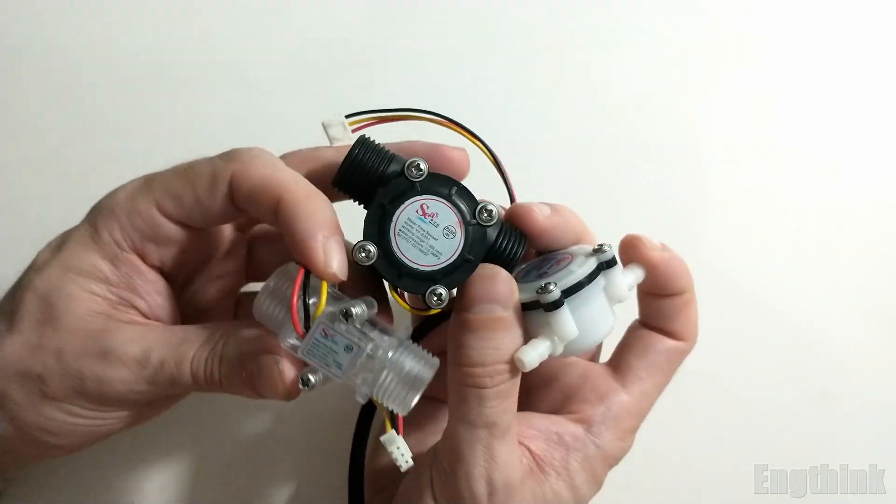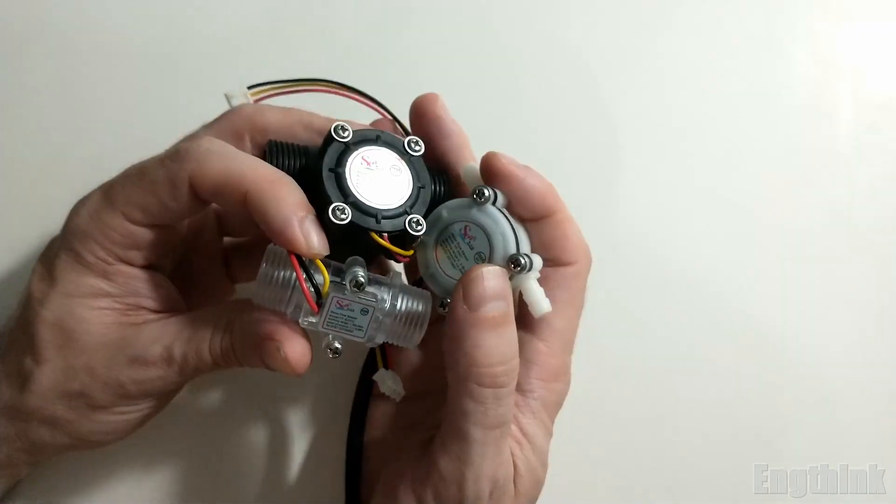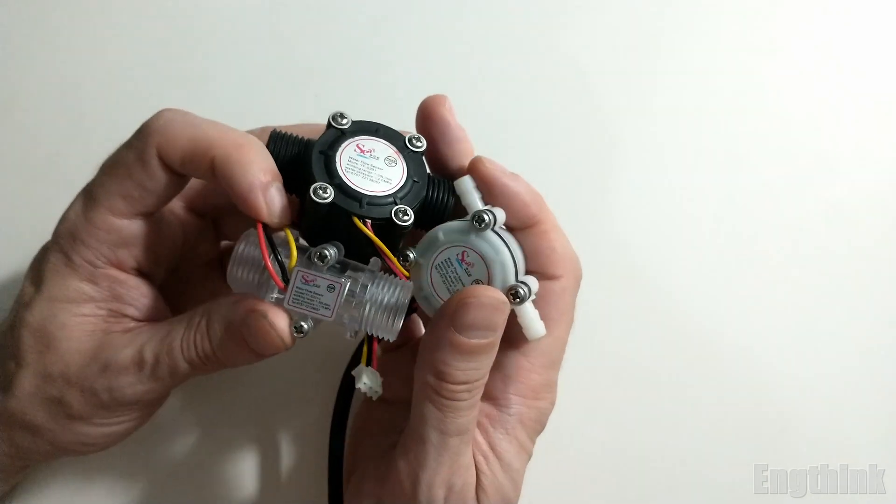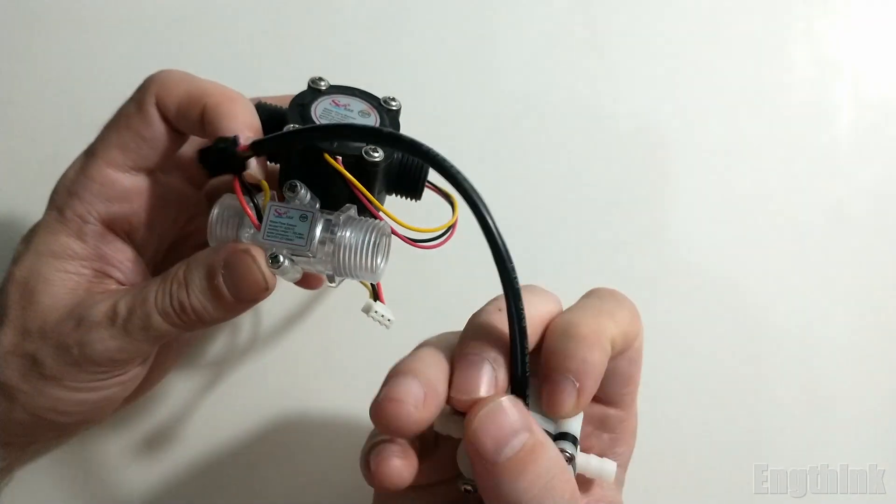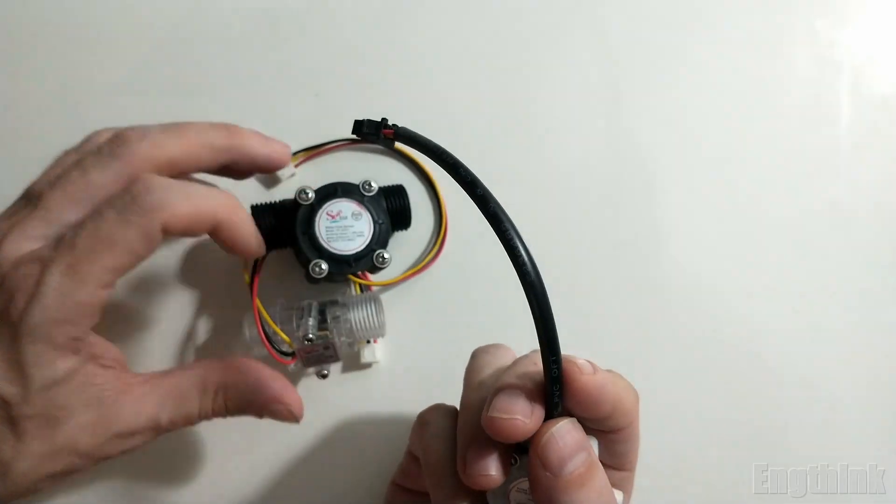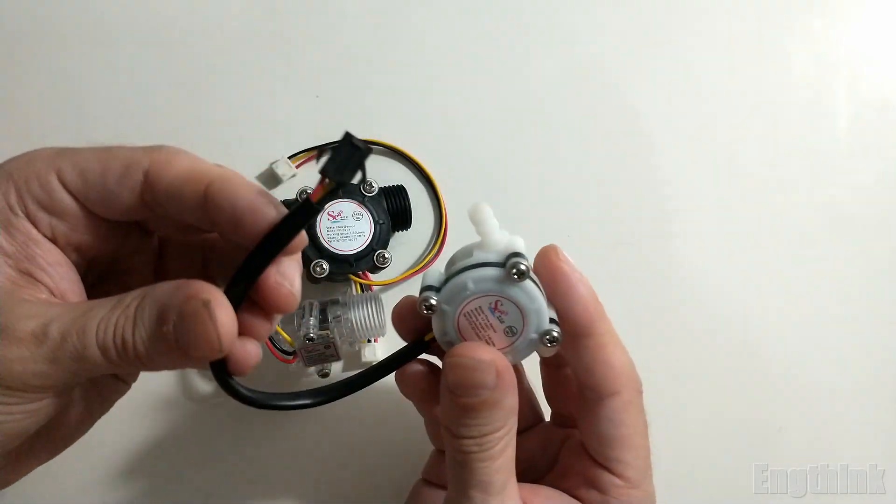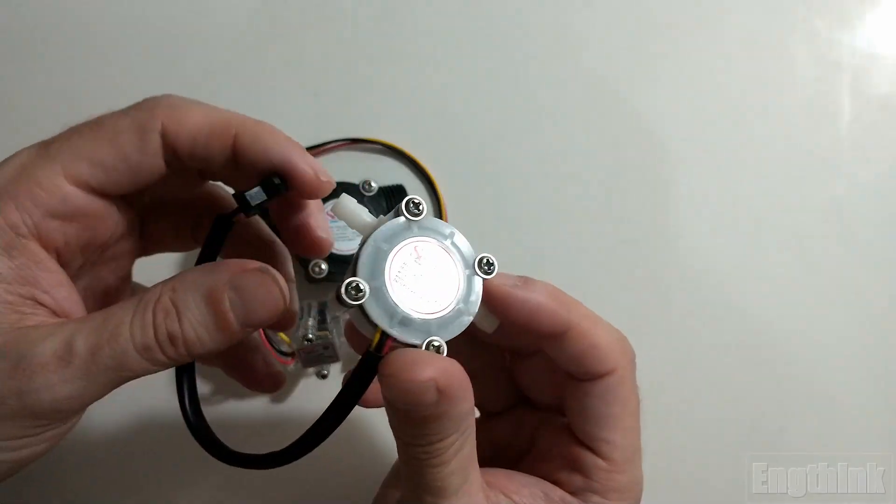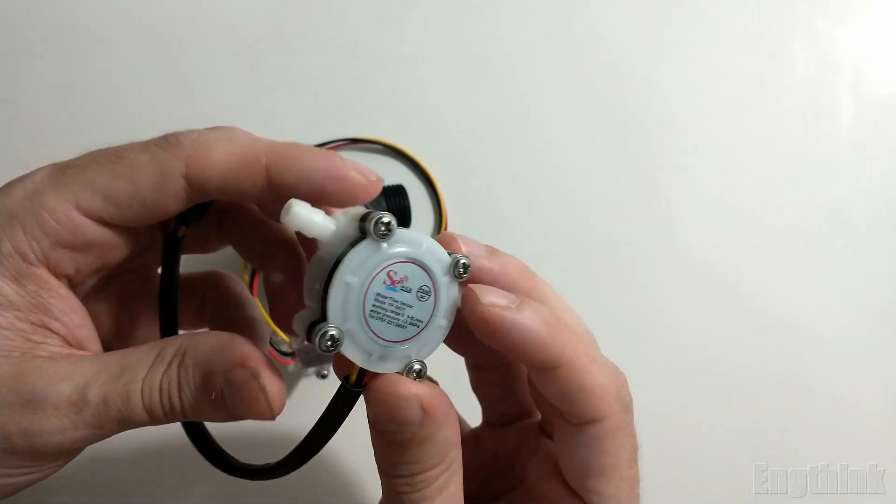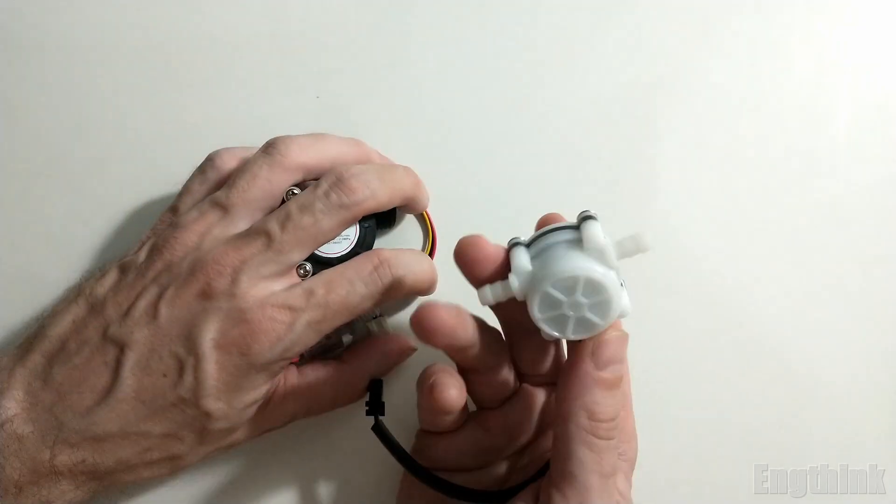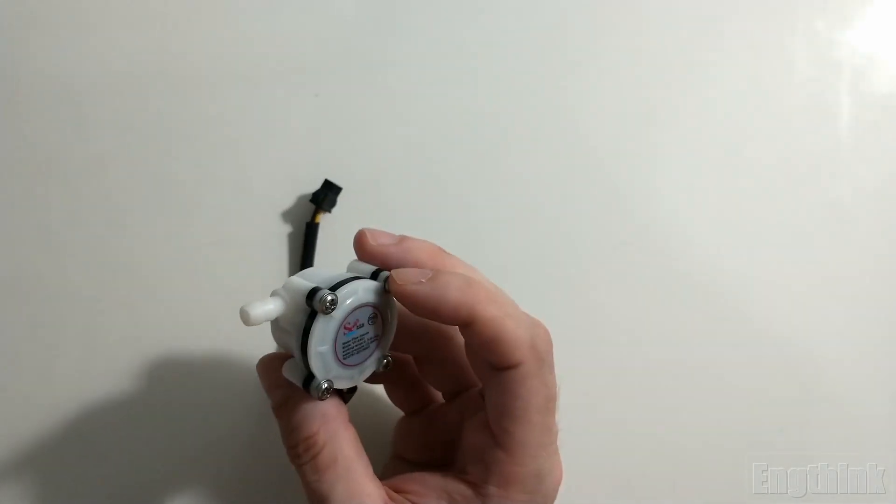I'll show which electronic component is inside them and how to test by connecting the wires in the respective positions. Finally, I will explain the principle of work for these three models of flow sensors. Let's start talking about the small one.